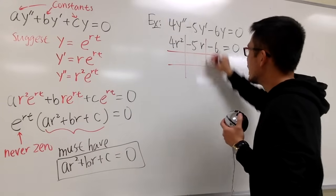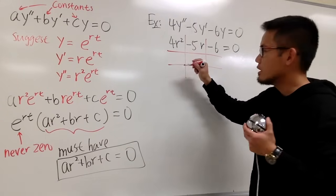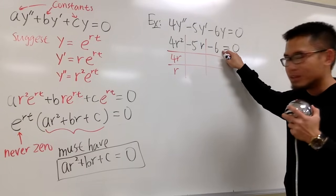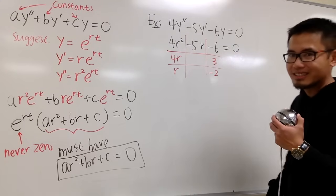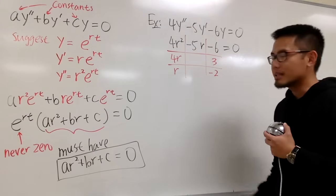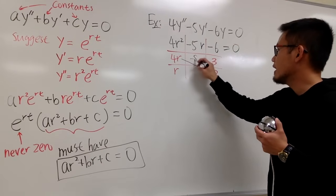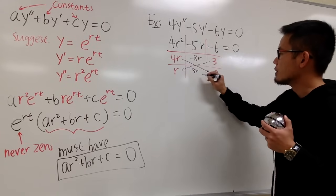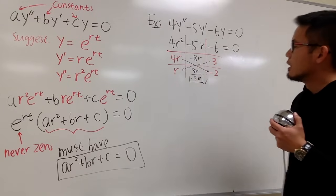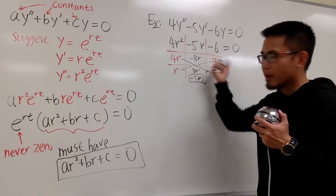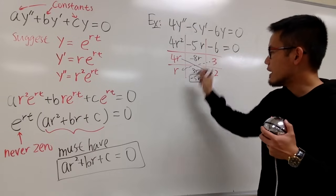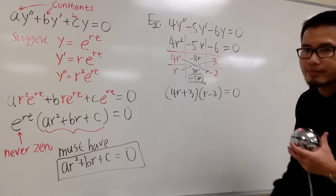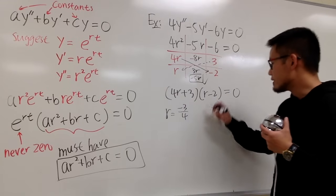I'll factor this using tic-tac-toe factoring. I ask: what times what gives 4r²? The correct combination is 4r times r. And what times what gives −6? The correct combination is −2 and 3 in those boxes. Cross-multiplying: 4r times −2 is −8r, and 3 times r is 3r. Indeed −8r + 3r = −5r, so this is correct. Reading across, the factors are (4r + 3)(r − 2) = 0, giving r = −3/4 and r = 2.